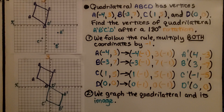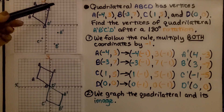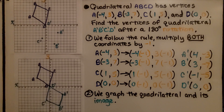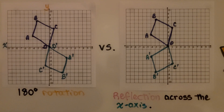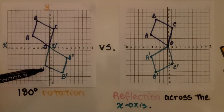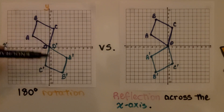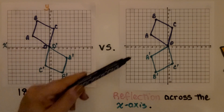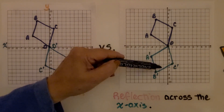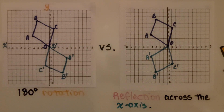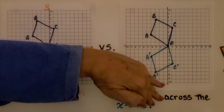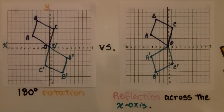We get A'B'C'D' and graph the quadrilateral and its image. We had the pre-image and rotated it 180 degrees to the image. Now be careful — you may think it reflected over the x-axis, but it didn't. If it were a reflection over the x-axis, the points would just flip down and this point would be directly above the other. A rotation places it differently, so be very careful.